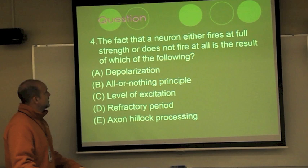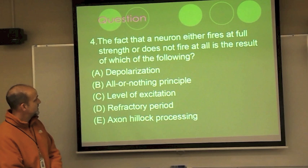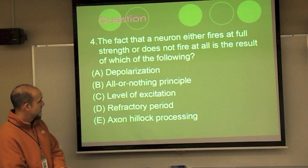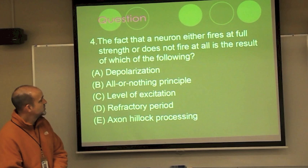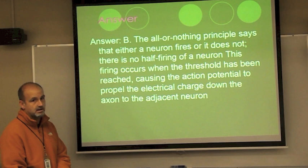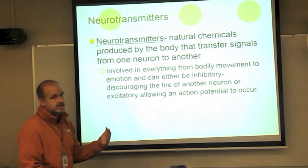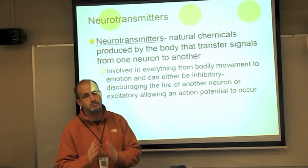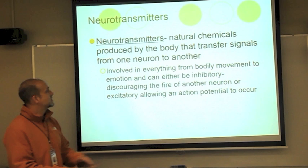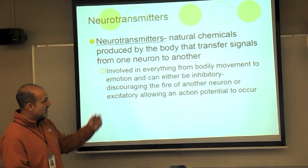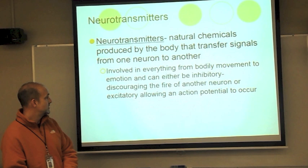A common test question: the fact that a neuron either fires at full strength or does not fire at all is the result of which of the following — depolarization, the all-or-nothing principle, level of excitation, refractory period, or action potential processing? The answer is the all-or-nothing principle. Neurotransmitters are chemical messengers specifically designed to carry certain messages, responsible for things you experience in your brain or body — from moving your arm, to generating a thought, to experiencing an emotion.